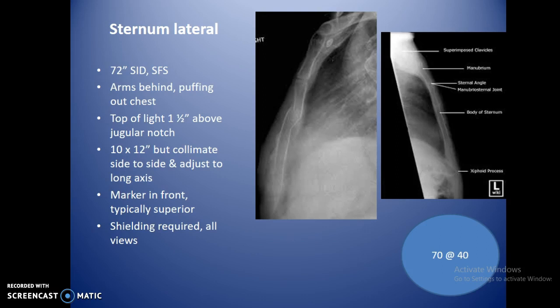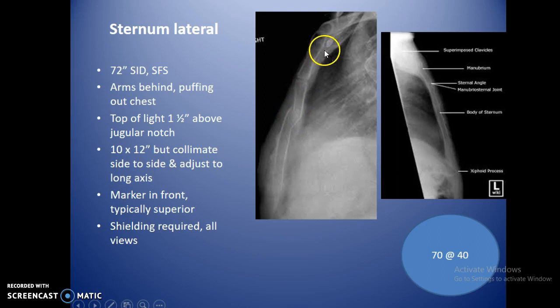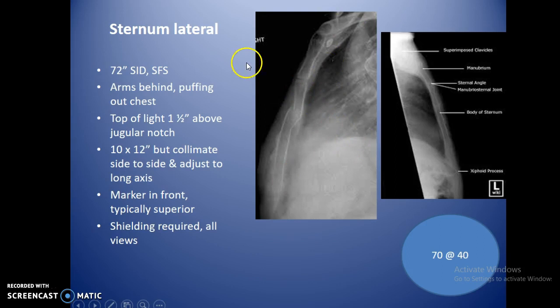For the lateral sternum, use 72 inches SID with the patient's arms behind the back to puff out the chest and get the humerus out of the way. Top of the light field should be about an inch and a half above the jugular notch, using a 10 by 12 IR lengthwise. A fractured sternum will show a sharp angle in the body, visible on the lateral. Shield the patient and mark the image.